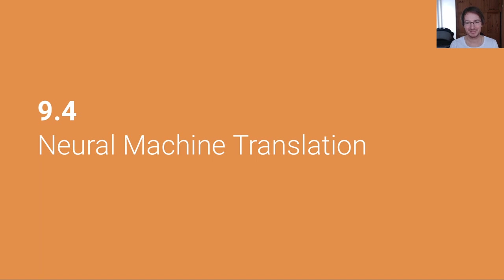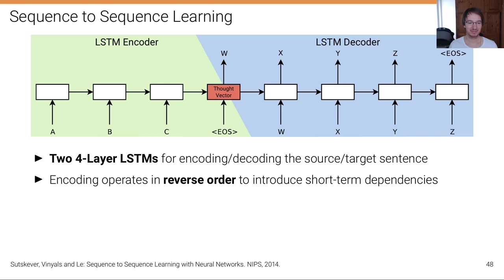The last unit of this lecture is on neural machine translation, which is maybe one of the landmark applications of neural language models. This is a paper that came out at NeurIPS 2014 from Elias Sutskever et al., 'Sequence-to-Sequence Learning with Neural Networks.' What they proposed is a very simple end-to-end trainable model for machine translation that shocked the community.